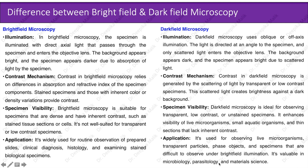The next slide shows differences between bright field and dark field microscopy. Illumination in bright field microscopy: the specimen is illuminated with direct axial light that passes through the specimen and enters the objective lens; the background appears bright and the specimen appears darker due to absorption of light. In dark field microscopy, oblique or off-axis illumination is used; the light is directed at an angle to the specimen and only scattered light enters the objective lens, so the background appears dark and the specimen appears bright due to scattered light.